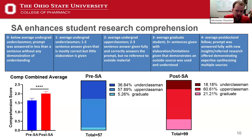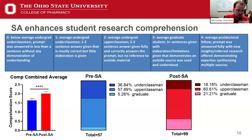That 5% might be those two or three students that are already highly motivated — you could throw a piece of raw meat at them and they'd get excited about it. But for students who needed a bit more guidance, with social annotation we were able to get over a fourfold increase in graduate-level comprehension, and also move students who were previously in the underclassmen range of understanding up to at least an upperclassmen level — even though the class was primarily freshmen and sophomores.